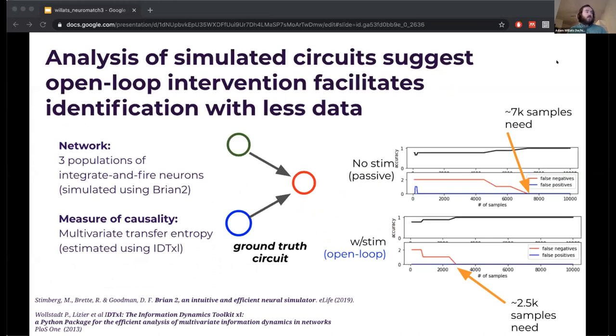Secondly, we took this idea and decided to evaluate it. One of the ways in which we evaluated it was to simulate very simple networks of integrating fire neurons in the Brian2 platform. Then we used a measure of causality called multivariate transfer entropy, which you can think of as like an information theoretic correlation that takes into account conditioning on other variables. What we saw in our very early simulations is that, in fact, if you were to just observe data passively from this network, you would need many more samples before you could uncover the ground truth structure than if you applied stimulation actively, in this case open-loop control. Part of our current work is to extend this analysis to more realistic network properties, and also apply closed-loop control and see where that has advantages for circuit identification.